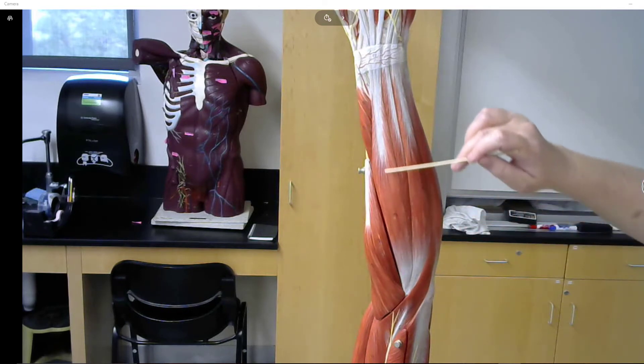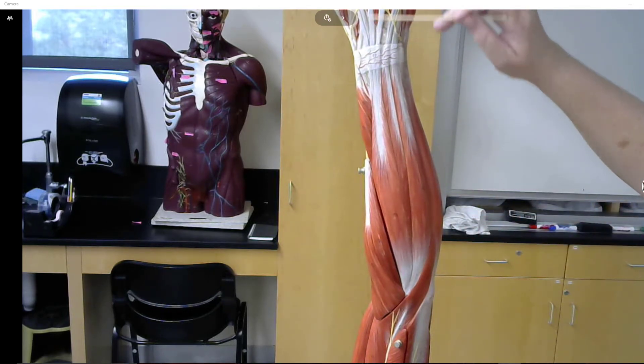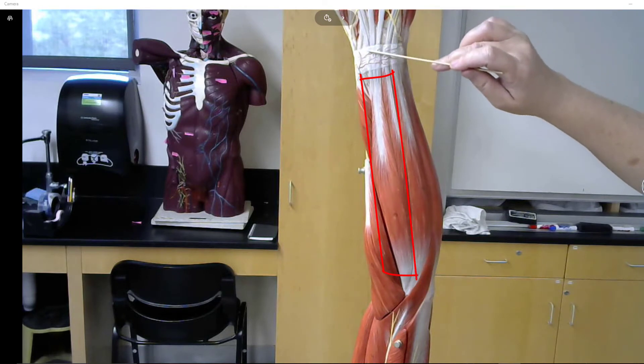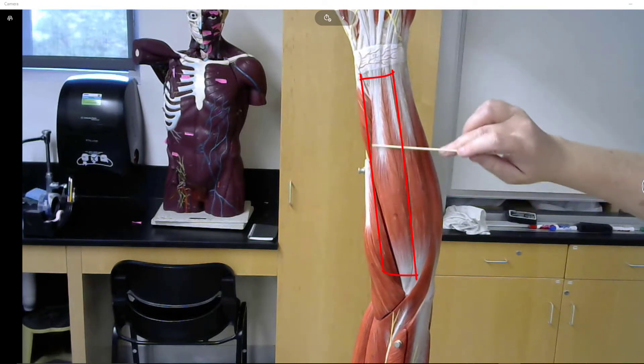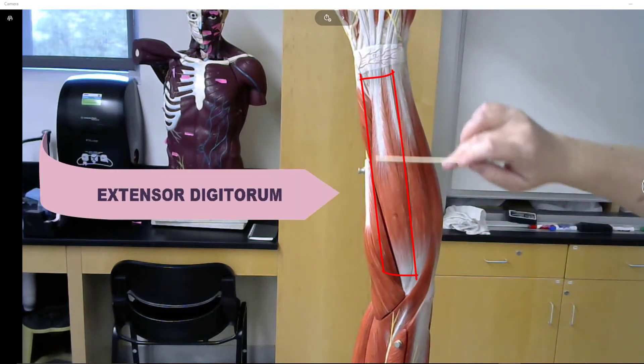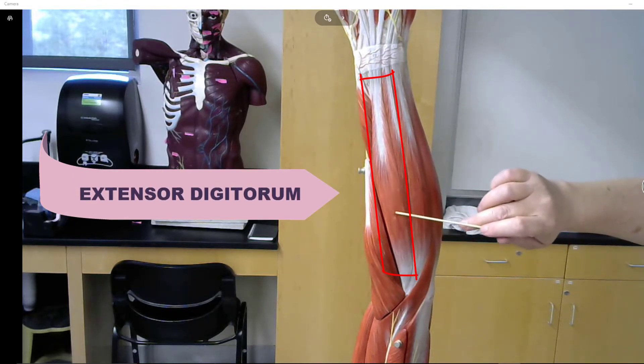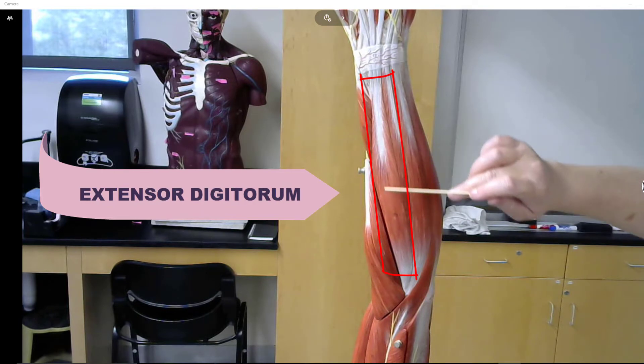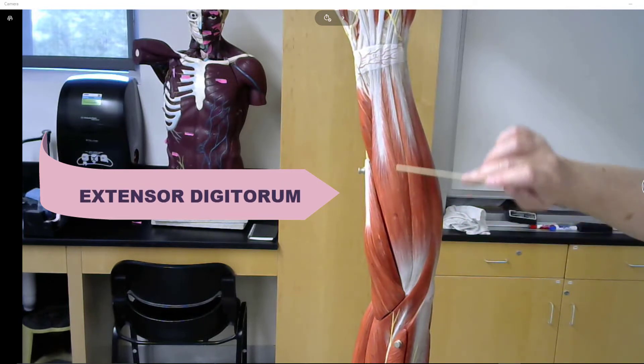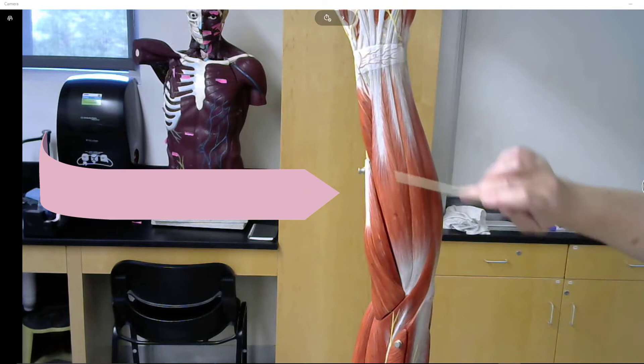This muscle here extends down from basically the middle fingers, and it's right here. This is the extensor digitorum, the extensor of the fingers.